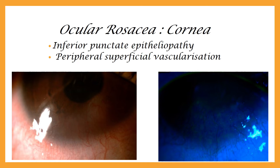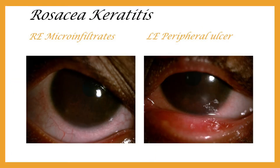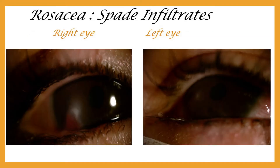Superficial vessels may form a pannus. In some cases, small pinhead-size limbal infiltrates develop, which may not take stain in the early stage. But if inflammation is intense, the overlying epithelium gives way and these lesions take up stain. As the disease progresses, infiltrates develop in the center too. Triangular infiltrates with the base towards the limbus are very characteristic, though not specific to rosacea.